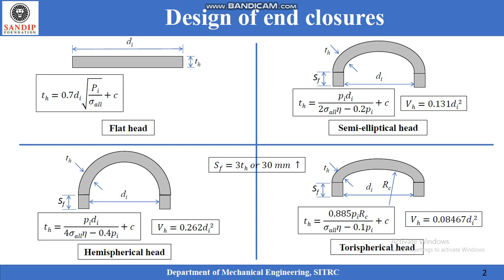In all these formed heads, an additional dimension SF can be seen in the diagram. This is the straight portion provided at the end of each type of head so that it smoothly matches with the main shell of the pressure vessel. The dimension SF is calculated by the formula 3 times thickness of the head or 30 mm, whichever is higher.